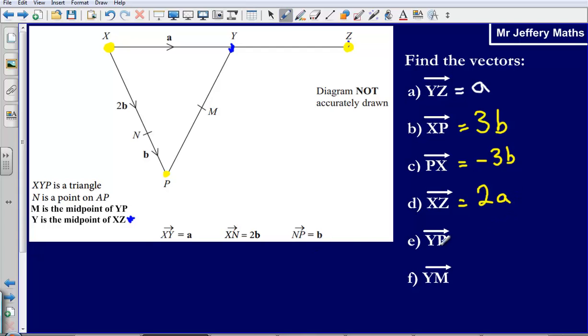Part E is YP. Now we can't use this route here, we don't know what it is, we don't know this direction. We only know the directions from X to Y and X to P. So we're going to have to go around to get from Y to P.